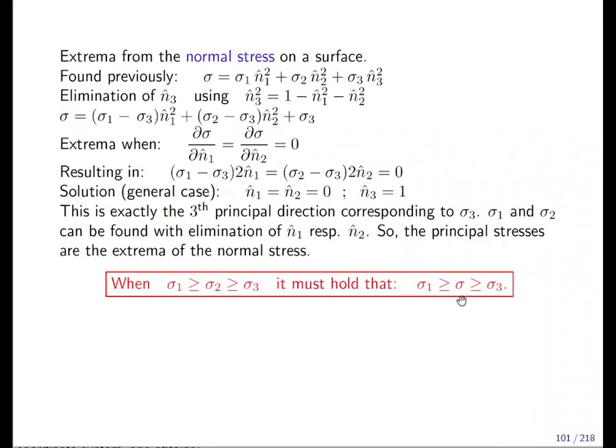The stresses, the normal stresses, are bound by sigma one which is the maximum and by sigma three which is the minimum. This is what this symbol here says. So this means the sorting, and this means any normal stress can only be smaller or equal than sigma one or larger or equal sigma three.